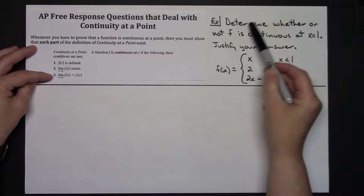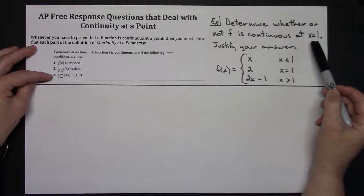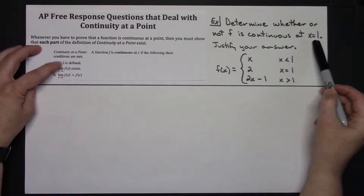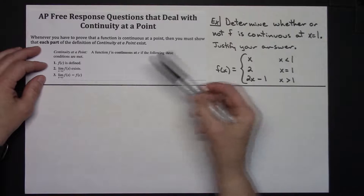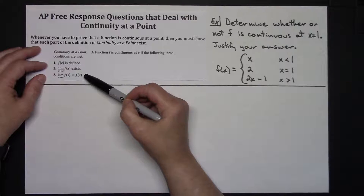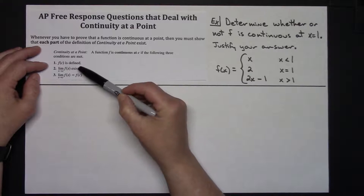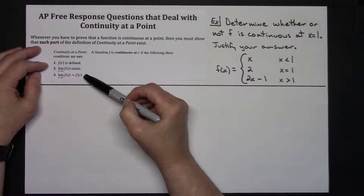If I'm going to determine whether or not this function is continuous at x equals one — one being my c value — I'm going to justify my answer using all three parts of this definition. As long as each one of these holds, then yes, it's going to be continuous at c. If one of these three parts fails to exist, then the function is not continuous at that point.